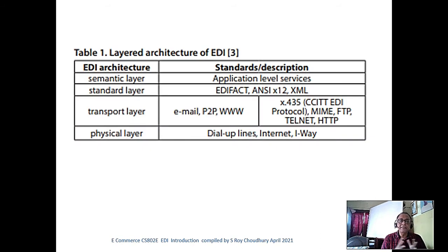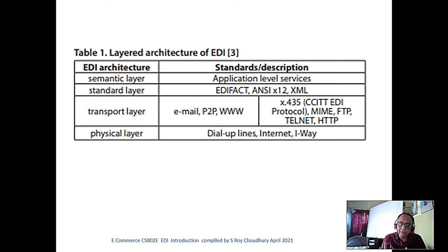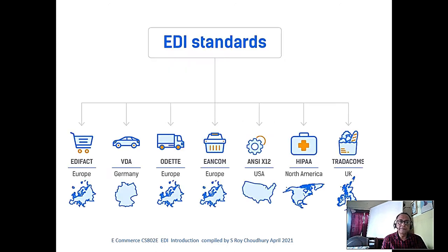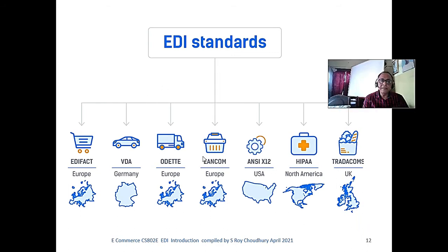EDI is basically an OSI layer 7 architecture — layer 7 protocols. These messages are layer 7 network protocols and they can use any underlying data layer. Regarding standards: there are two main standards. One is the American standard, ANSI — the USA follows this. Europe follows the EDIFACT standard.